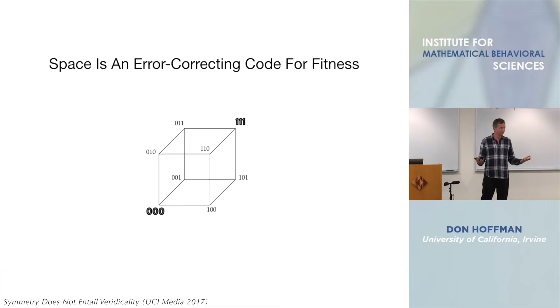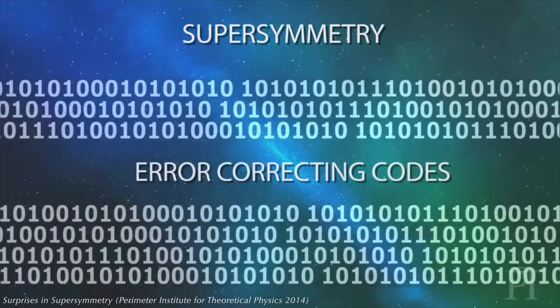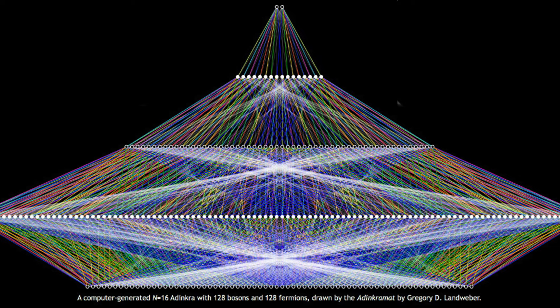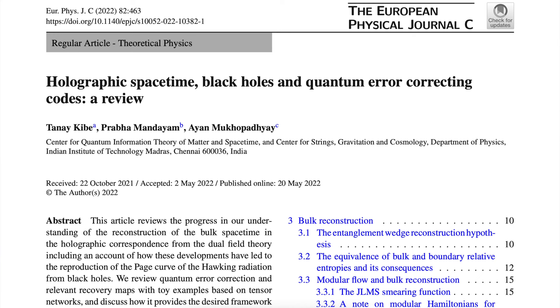Now let's turn to physics. Theoretical physicist Jim Gates has discovered error correcting code in the string theory slash supersymmetry equations that ostensibly govern our universe. Specifically, doubly-even, self-dual-linear, binary error correcting block codes. Some physicists believe space and time might be a quantum error correcting code.